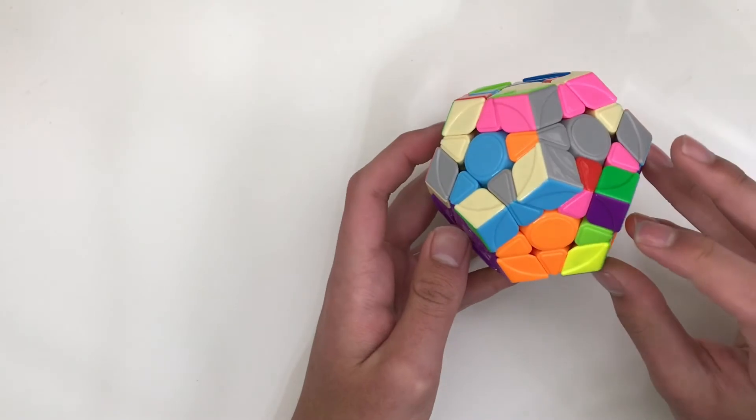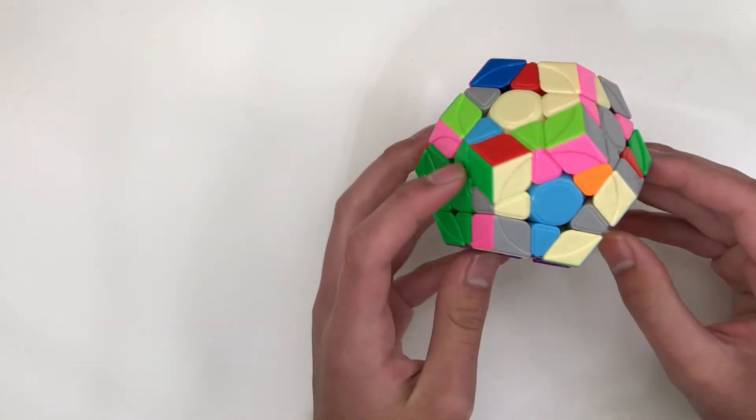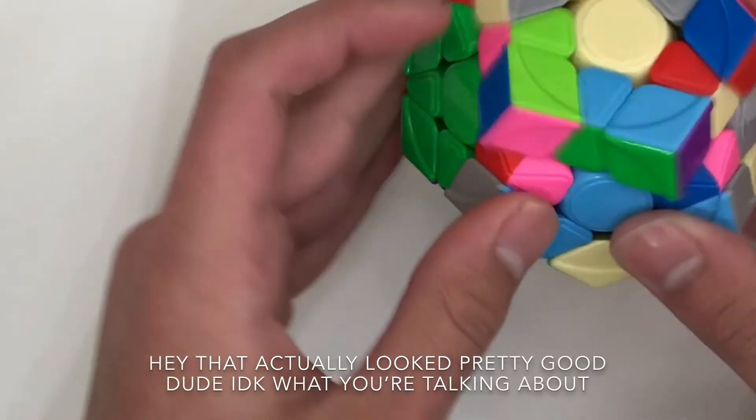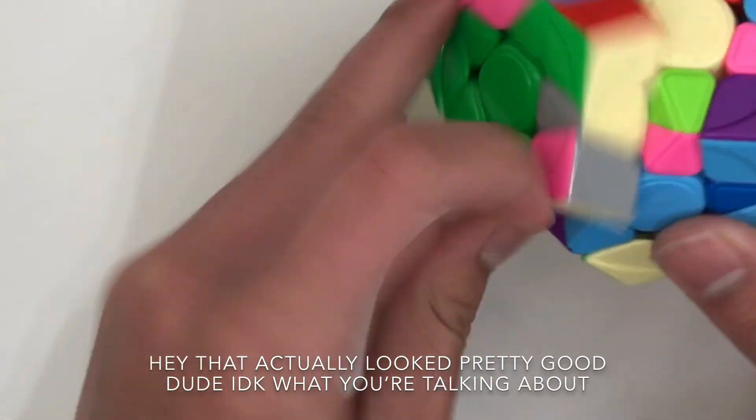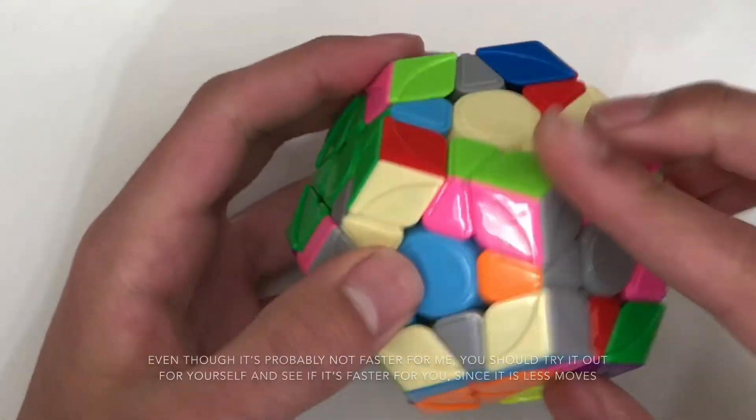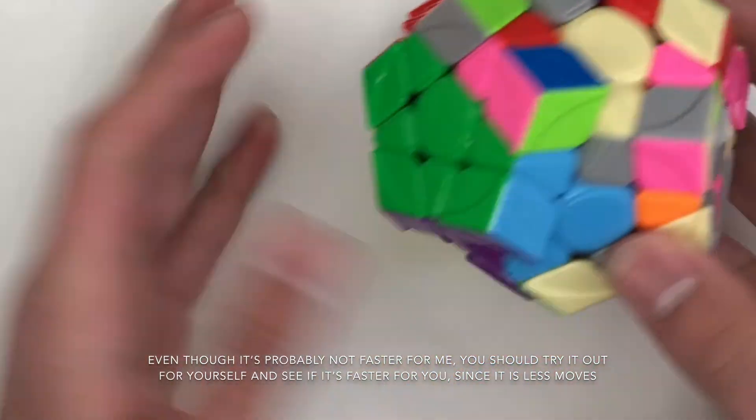Same with S2L, if we wanted to solve this purple, green, blue, and we got the edge right here, instead of doing this, we could do this. We could do an F or F' and then insert like that.